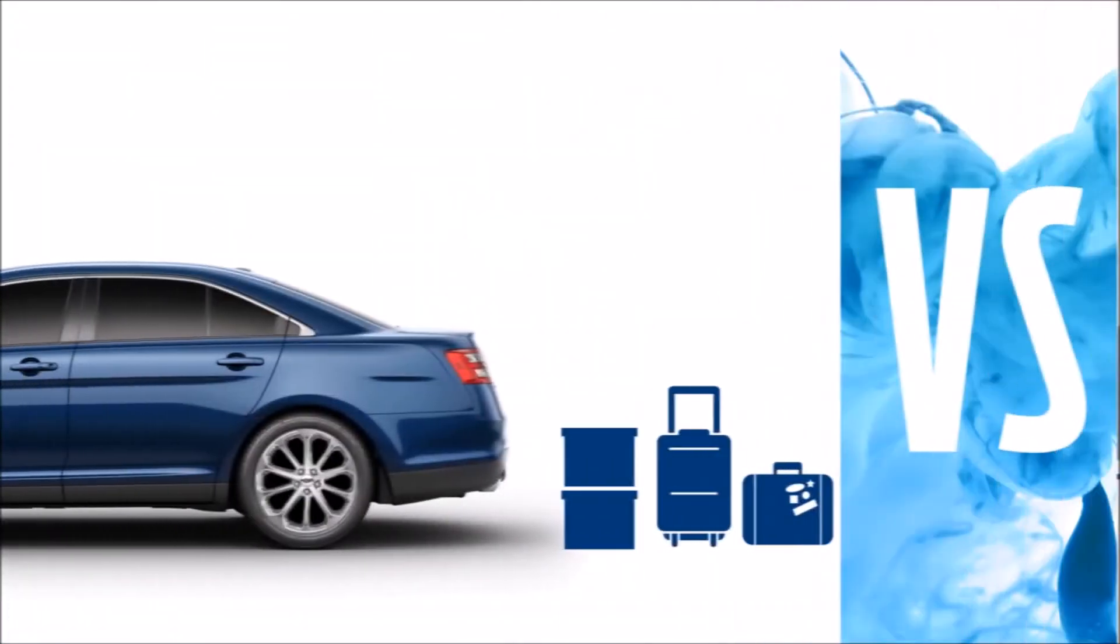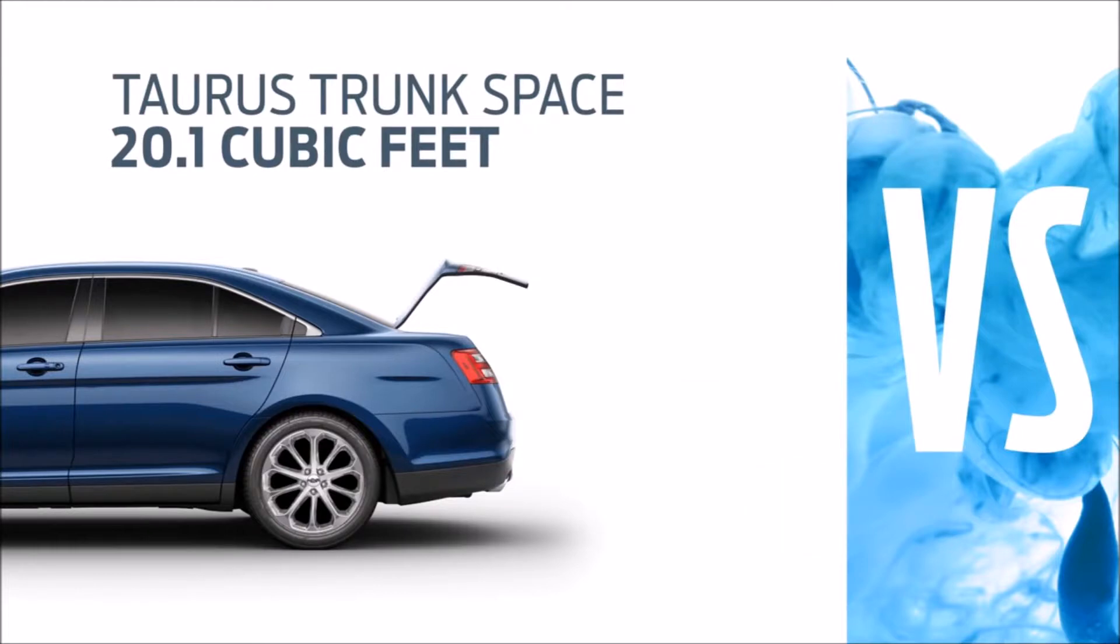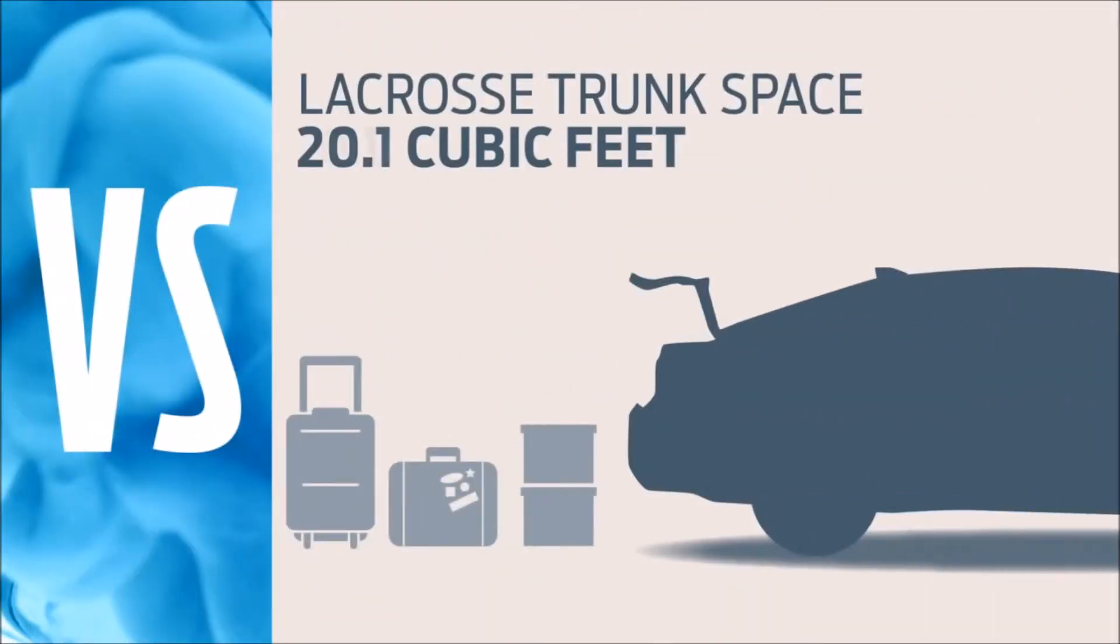Taurus is also big on trunk space with 20.1 cubic feet. LaCrosse only has 13.3 cubic feet.